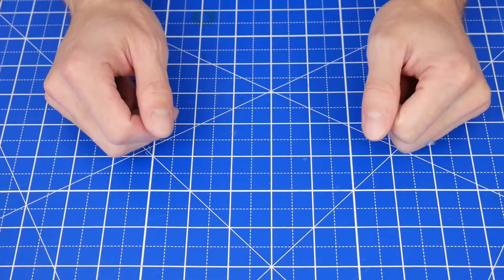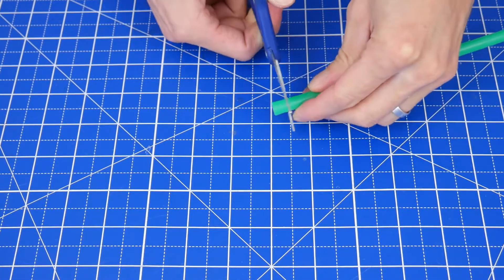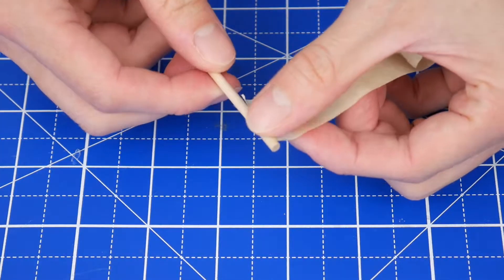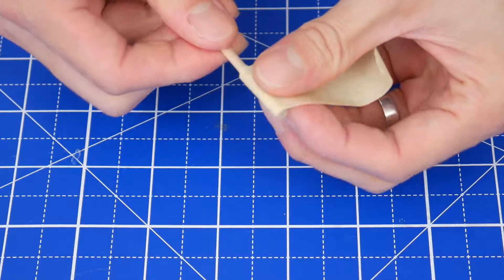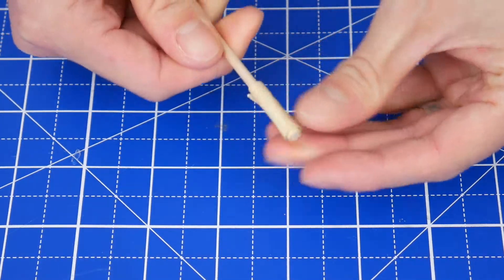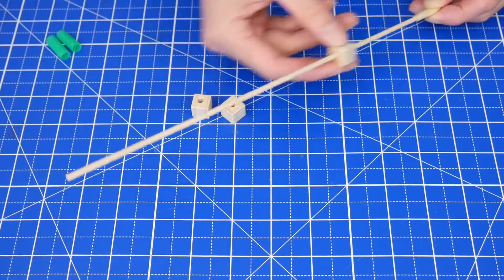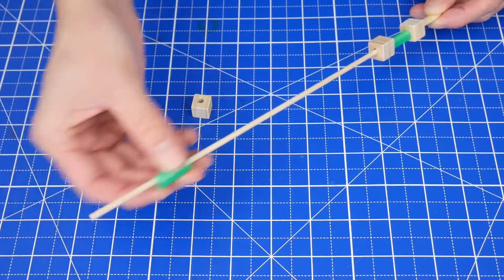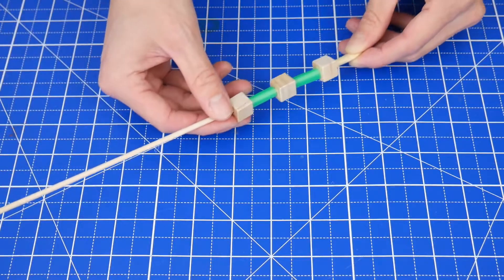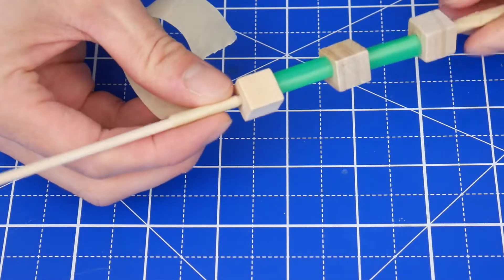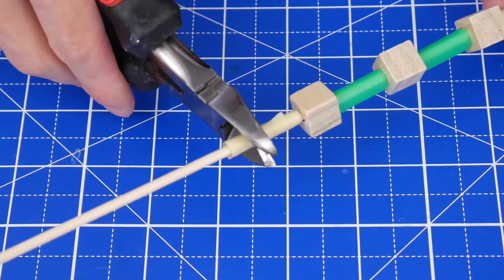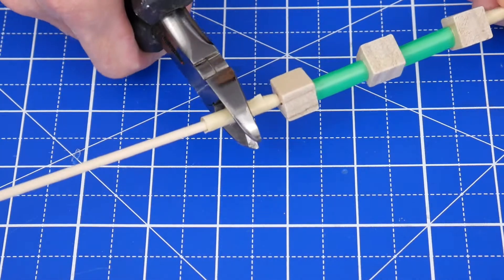First, we need to make the hinge. Cut two straw pieces that are about three quarters of an inch long. Then get an eighth inch dowel and wrap many layers of tape around one end. Then alternate fitting a cube with holes and one of these straw pieces onto the dowel. Wrap more tape around the other side of the dowel to stop the cube from falling off here, and use a pair of wire cutters to trim off the excess dowel.